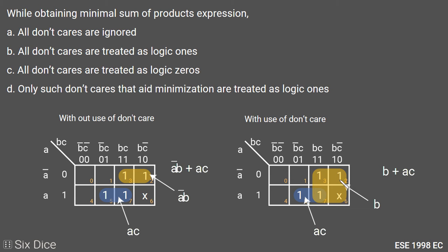If we use the don't care condition, this pair turns into a quad and minimizes as b, and this pair minimizes as a·c like before. With the don't care, the same K-map minimizes to b + a·c. Here, the don't care condition is used as logic 1.